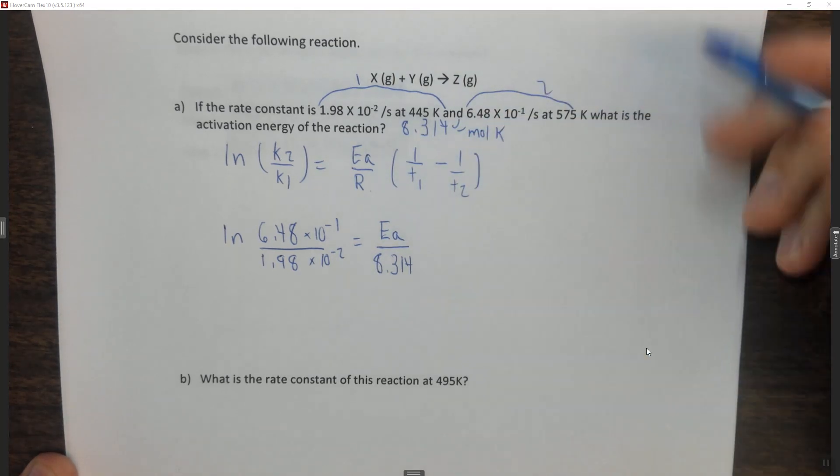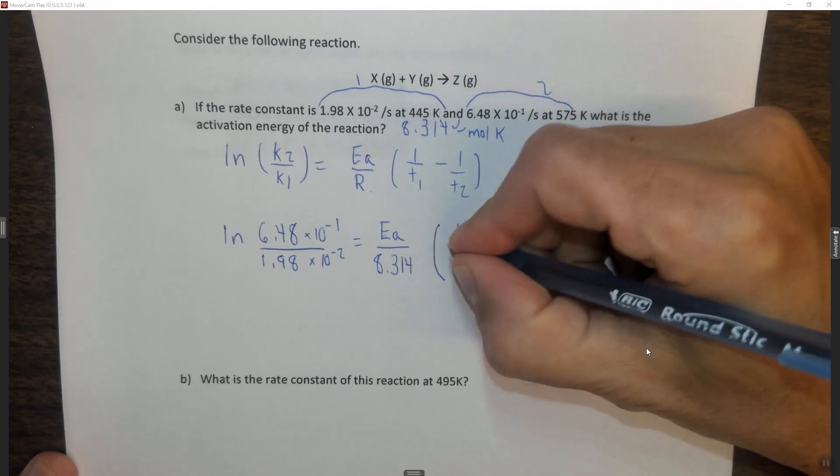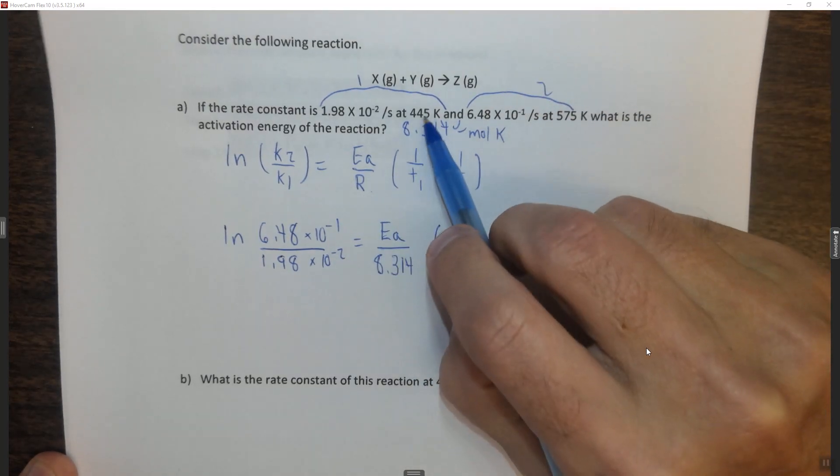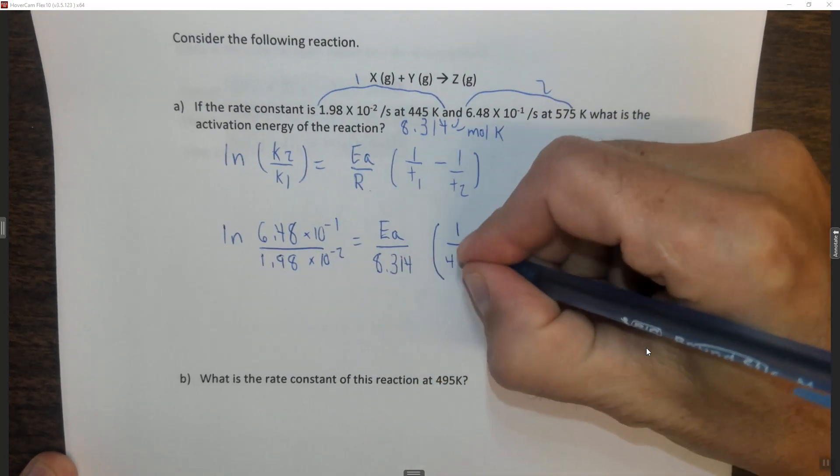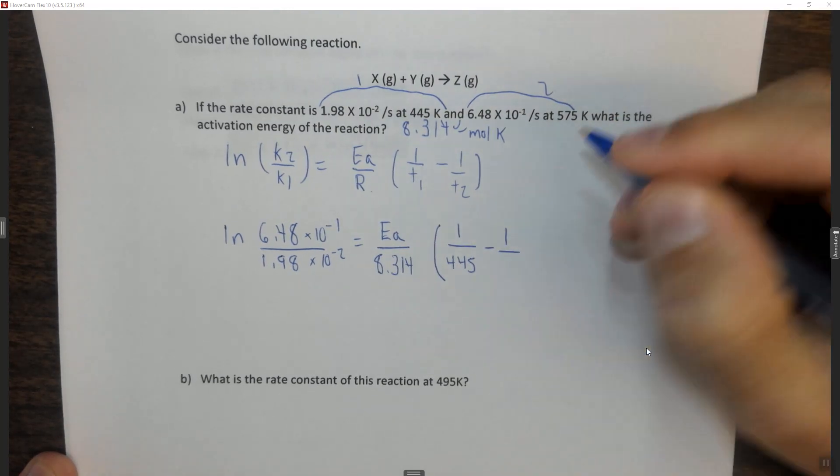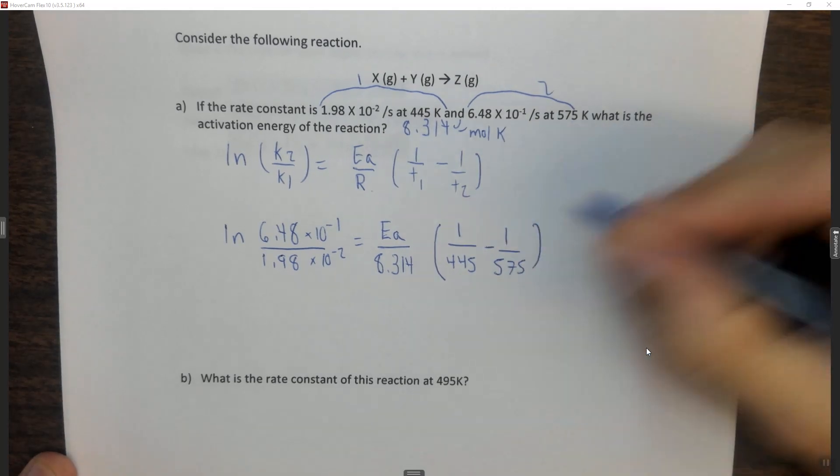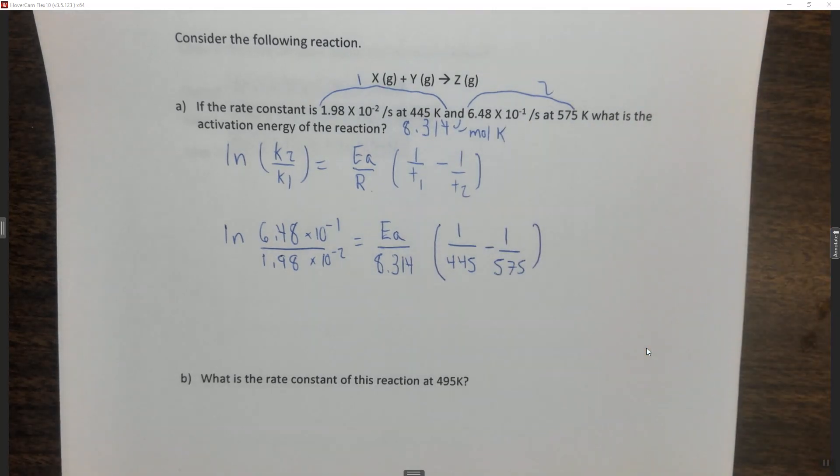The math is a little bit long here, so I'm not writing all the units, which is probably not the best. Times 1 over T1, make sure you use the right one, in this case is 445K, minus 1 over T2 which is 575K. Again, not writing in the units, probably not the best, but the math here is a bit complicated.